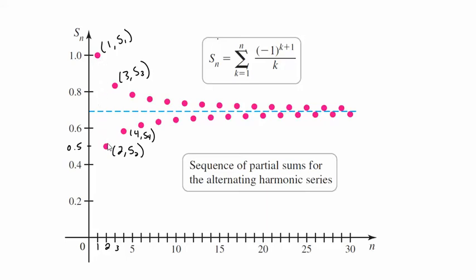Now the next term's positive, so we're going to get a bigger sum. Then the next term's negative, so our sum's going to get smaller. Then the next term's positive, so it's going to get bigger, smaller, bigger, smaller, bigger, smaller. And we see what's happening here.